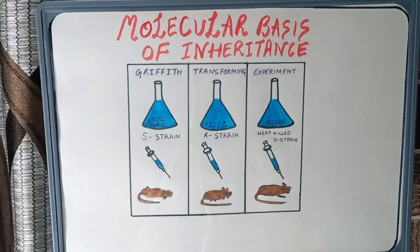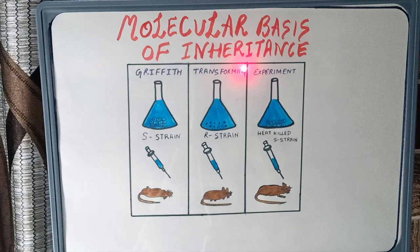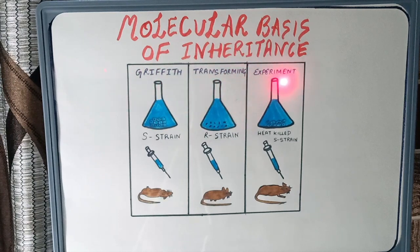Hello students, this is the 4th video of Molecular Basis of Inheritance and the topic covered is Griffith's transforming experiment. So let's start.